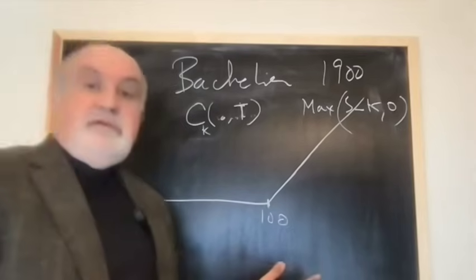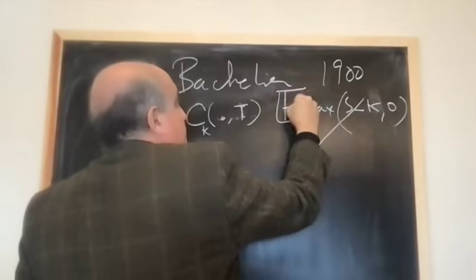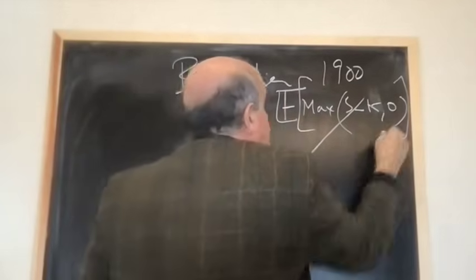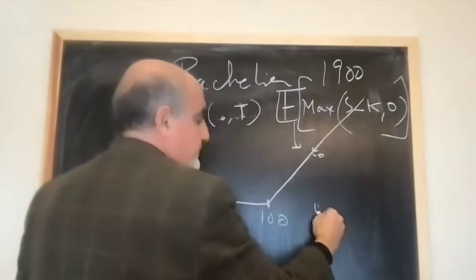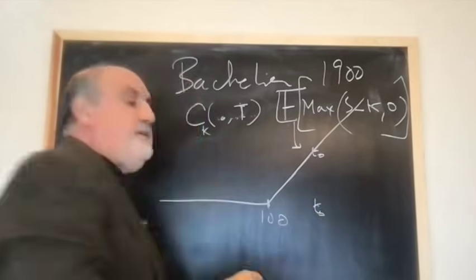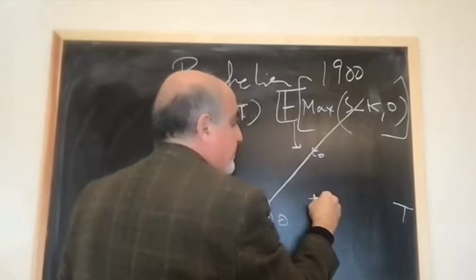And for Bachelier, it's very simply the expectation of that at time T zero. So we have time T zero. I'm pricing an option, European option, for, say, three months, cap T. I'm pricing the option here.